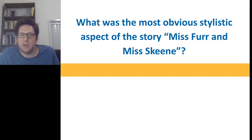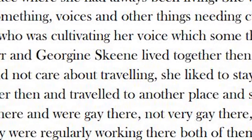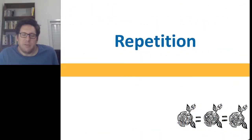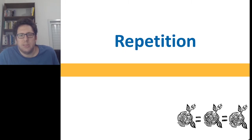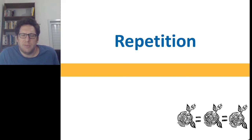Her style is often very experimental. Just before I go on with the video, I wanted to ask you: what was the most obvious stylistic aspect of the story? So if you said repetition, you are correct. It's a very short story, but the vocabulary is very limited because she repeats the same words again and again. The way we're going to read the story is to think about a number of these words and what they mean, especially a kind of code word. So repetition is very, very typical of Stein's style.